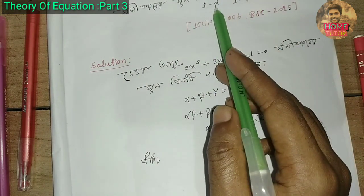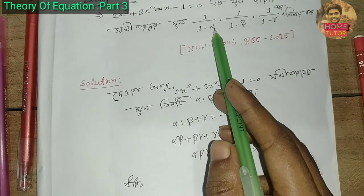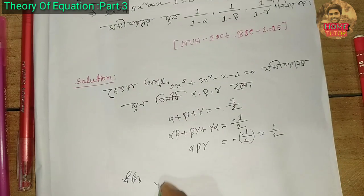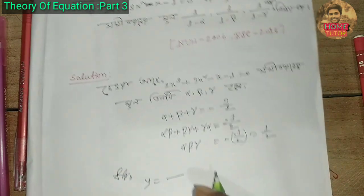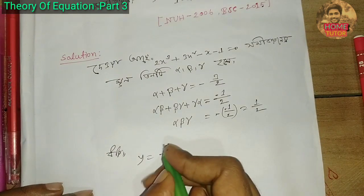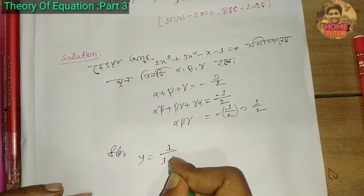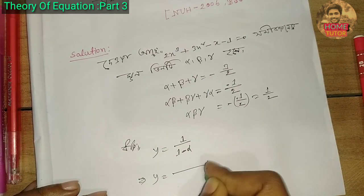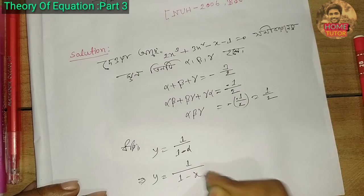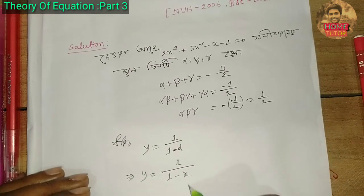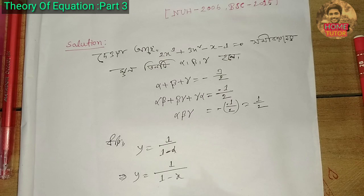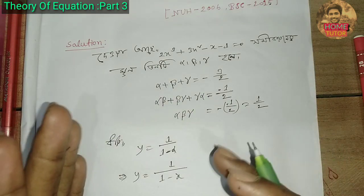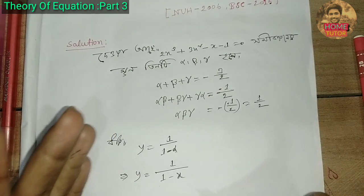We have 1 by (1 minus alpha), 1 by (1 minus beta), 1 by (1 minus gamma). So we say that y equals 1 by (1 minus alpha). This is equal to y equals 1 by (1 minus x). So alpha is 0, beta is 0, gamma is 0.